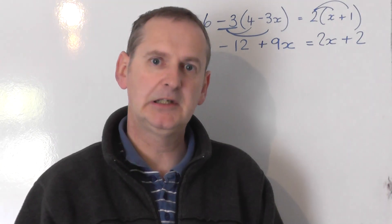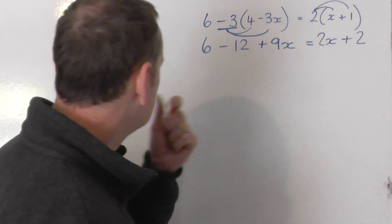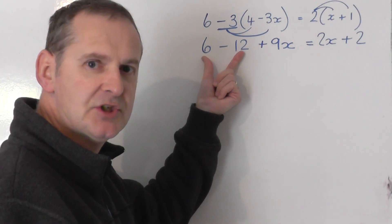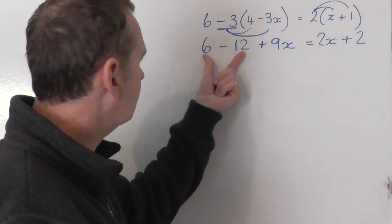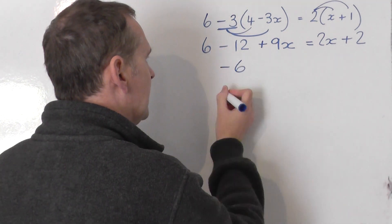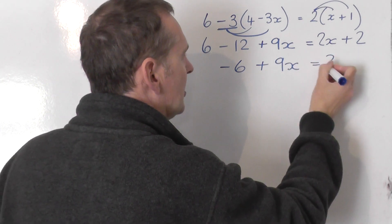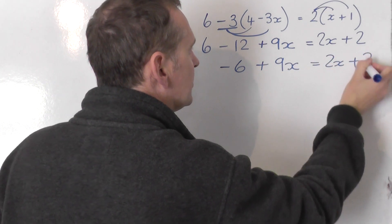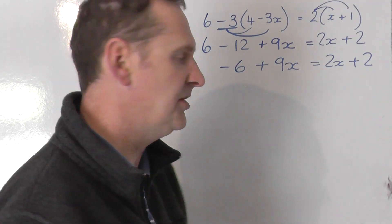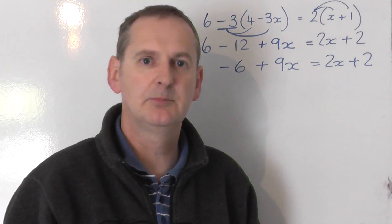Let's tidy up a little bit on the left hand side. Because on the left you've got two numbers 6 minus 12 which can go together. 6 minus 12 is a negative 6. Plus 9x equals 2x plus 2. I'll leave that unchanged on the right hand side because that can't simplify.